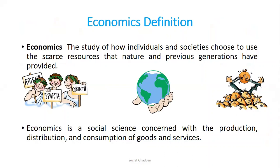In this definition, the keyword is scarce resources. Resources are scarce due to the limited space of earth. On the other side, you have the unlimited desire of human beings. Since we have unlimited desire on one side and limited space and resources on the other side, this is why we have scarce resources and we have to make a choice.